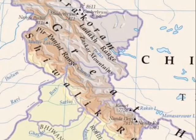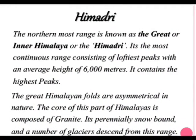Any part of the Earth which is higher than 900 meters with a distinct peak is called a mountain. The northernmost range of the Himalayas is known as the Great Himalaya or Himadri — it is the most continuous range, with an average height of 6000 meters and contains the highest peaks. The Great Himalayan folds are asymmetrical in nature. The core of this part of the Himalaya is composed of granite, it is perennially snow-bound, and a number of glaciers descend from this range.